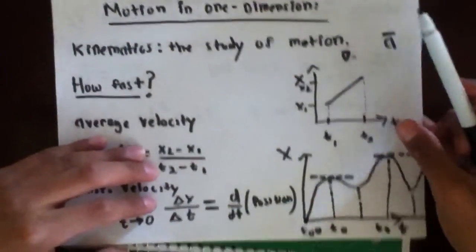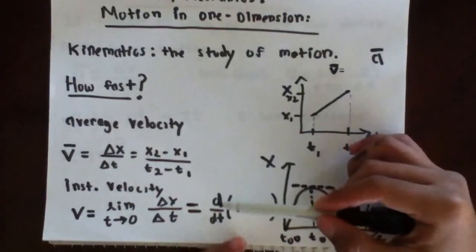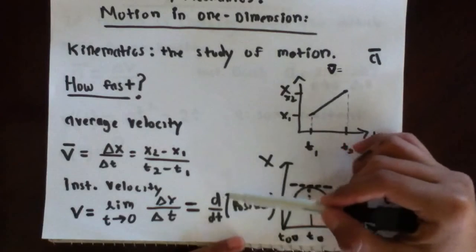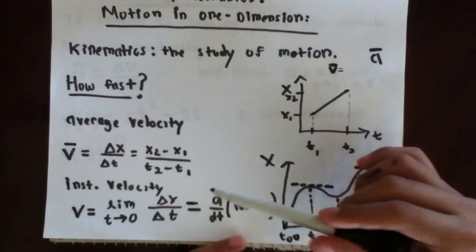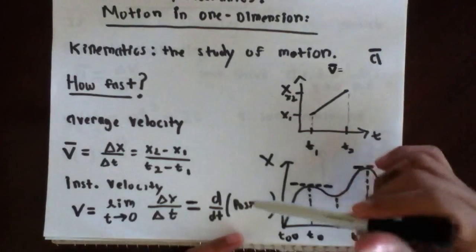And if you have studied calculus before, we call this the derivative. And in this case, velocity is the time derivative of position.